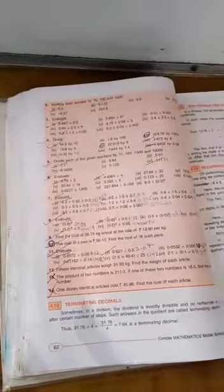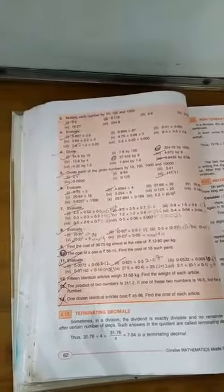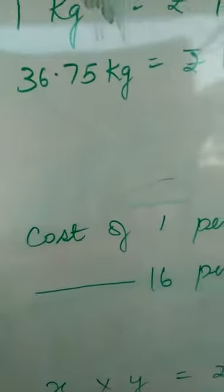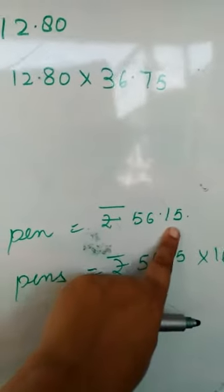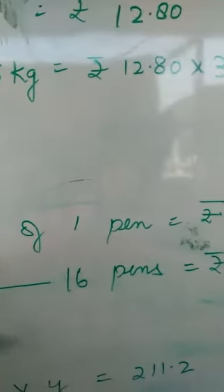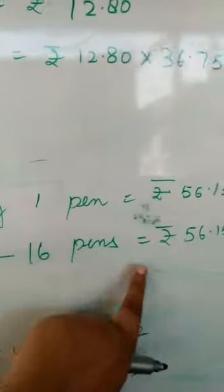Now question number 10: find the cost of a pen. The cost of a pen is given. Find the cost of 16 such pens. Cost of one pen is rupees 56.15, I think it is of Trimax, and you have to find the cost of 16 pens. So cost of 16 pens is again multiply.